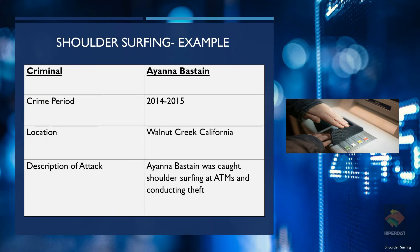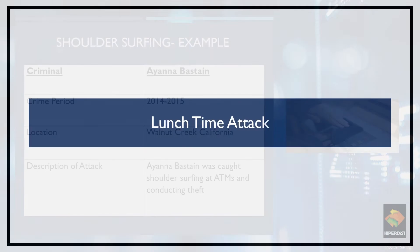This is a real-life example of a common shoulder surfing act that took place in America. Between 2014 and 2015, Ayana Bastien was caught shoulder surfing at ATMs in Walnut Creek, California for credit card and PIN details. She later conducted theft with all the details she acquired and was prosecuted for all her crimes at a later time.